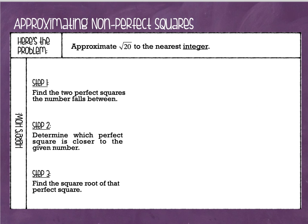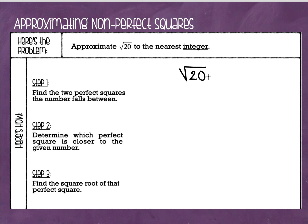Here's the problem. We are going to approximate the square root of 20 to the nearest integer. Now when we have a radical, if there's a number inside the radical that's a perfect square, it's very easy to answer. If we had a 36 in here, we would know that the answer is 6 because 6 times 6 is 36. If we had 144 in here, we would know the answer is 12, because 12 times 12 is 144. 36 and 144 are perfect squares. However, 20 is not a perfect square — there isn't an integer I can multiply by itself to get 20. So that's why we have to approximate or estimate it.